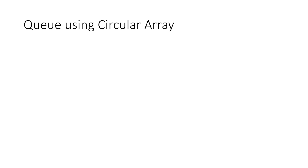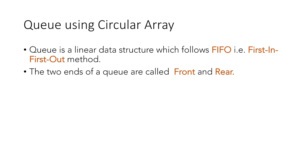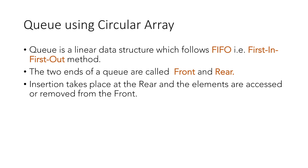In this tutorial, we will implement a queue using a circular array. As we know, a queue is a linear data structure which follows FIFO, i.e., first in first out. The two ends of the queue are called front and rear, where insertion always takes place at the rear and elements are accessed or removed from the front.